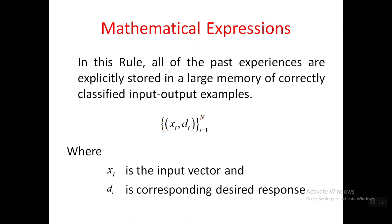We represent this as (xi, di), where i is equal to 1 to N. That means there are N inputs stored in memory with their corresponding responses, where xi is the input vector and di is the corresponding desired response — meaning which classification it belongs to. All N inputs and their corresponding classifications are stored in the large memory.